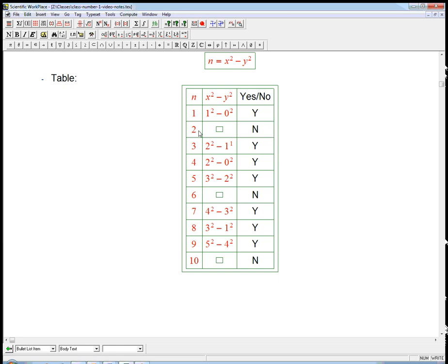If it's a difference of two squares, it seems like it's congruent to 2 mod 4. And if it's congruent to 2 mod 4, it seems like it's not a difference of two squares. And vice versa. It's bidirectional.